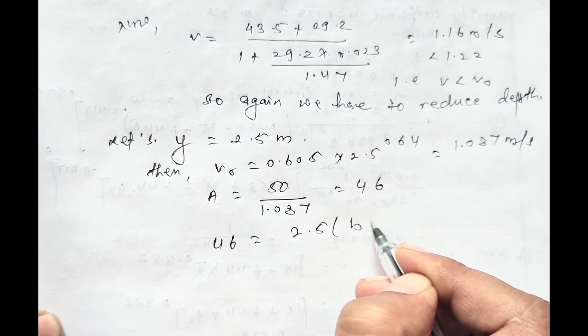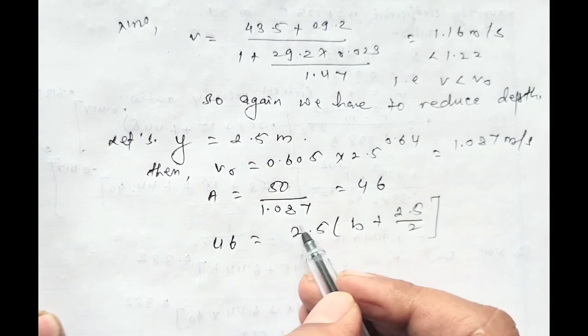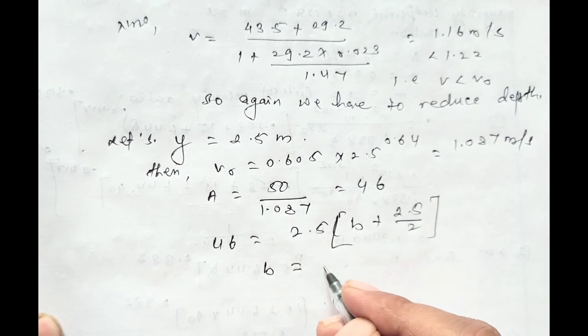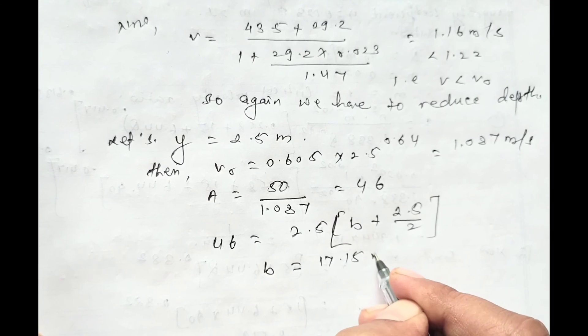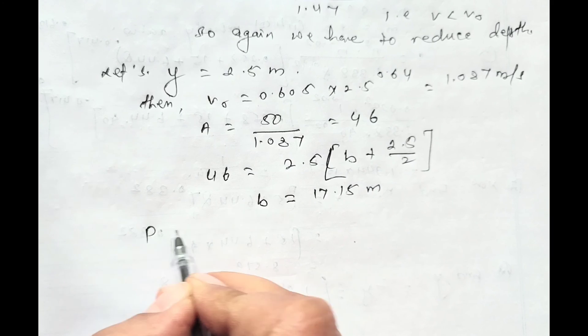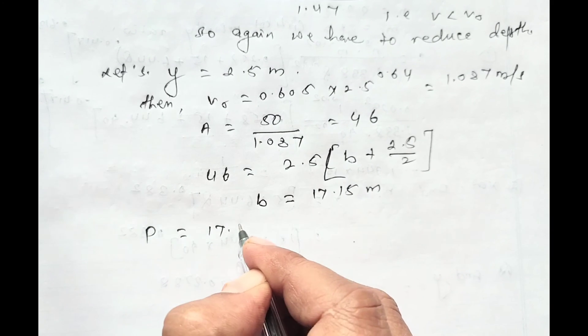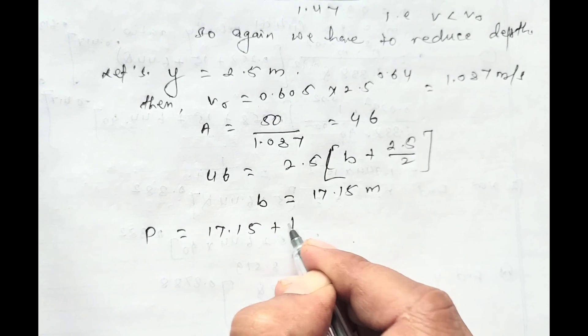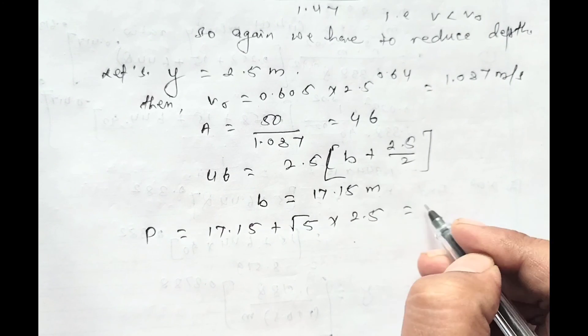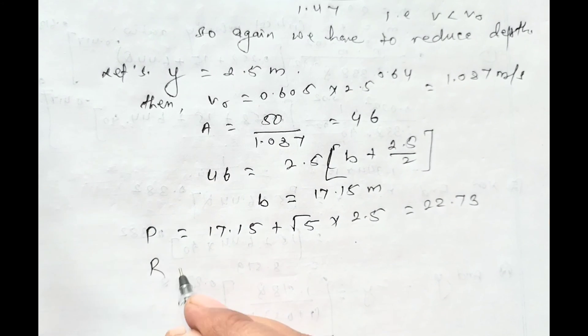So area equals 46 equals 2.5 times (B plus 1.25). From this we'll calculate B equals 15.15 meter. Now we'll calculate the perimeter P equals 15.15 plus √5 × 2.5 equals 22.73, and hydraulic radius R equals A by P equals 2.02.